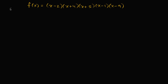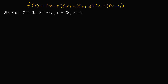The zeros are the x values that make our function equal to zero. That's going to be x equals two, x equals negative four — that would make this expression zero — x equals negative five. Remember, if you make any one of these equal to zero, then the entire function is going to be equal to zero, because zero times anything is zero. Also x equals one, and x equals nine.